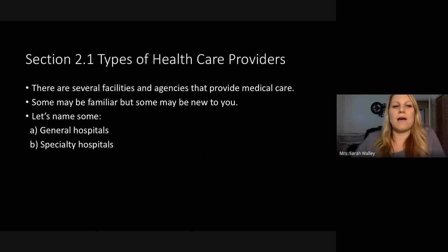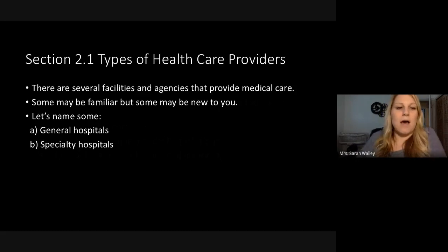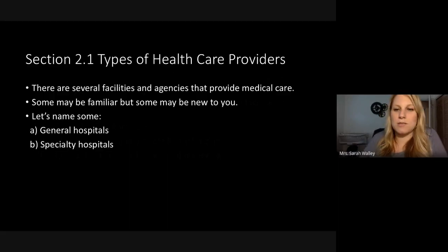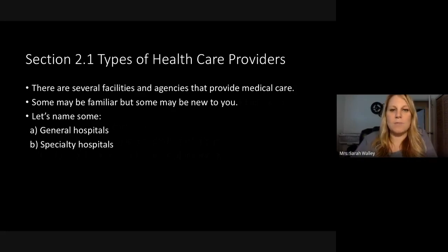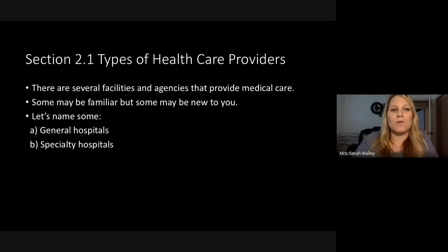So types of healthcare providers — there are several facilities and agencies that provide medical care. If you read chapter two, you would see all the different kinds. Some may be familiar but some may be new to you. Some ones that you might know: general hospitals, specialty hospitals, even primary care doctors. A lot of times you think of hospitals as the only things, but your primary care doctor like a pediatrician — a specialty hospital might be something like an urgent care. Emergency rooms in the hospital are for more serious things.